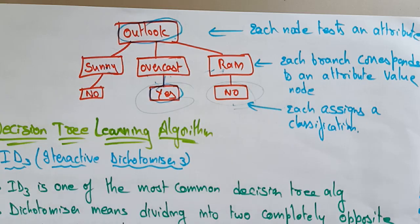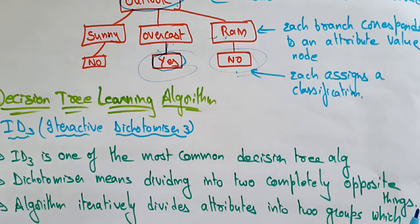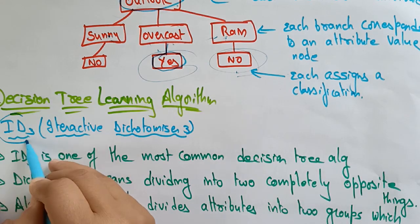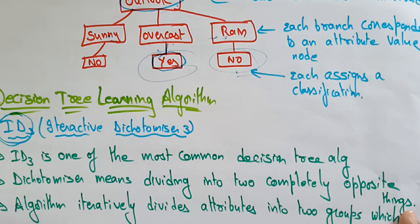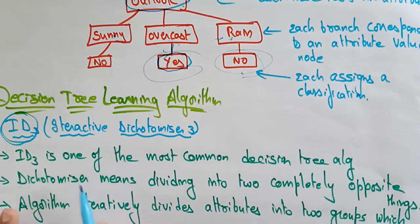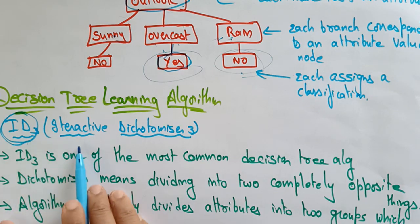There are many algorithms available to represent and make a decision tree. One of the most famous and common decision tree algorithms is ID3. In this video I want to explain the ID3 algorithm, and later I'll take an example to explain it as well.